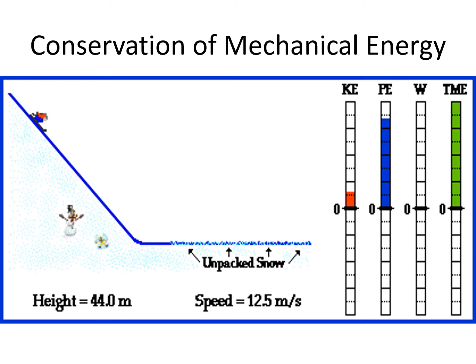Observe the values of kinetic energy, potential energy, work, and total mechanical energy. When work is done, total mechanical energy becomes zero because work converts mechanical energy to heat, which is dissipated into the environment.